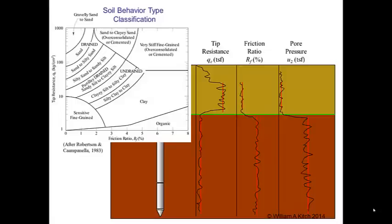We can use the CPT measurements to classify the soil based on its behavior, using the chart developed by Robertson and Campanella in 1983. This chart has different soil classification regions based on the measured friction ratio and tip resistance. The area in the upper left-hand corner represents high tip resistance and low friction ratio, labeled as a region of sands and gravels. Sands and gravels have high frictional resistance but no cohesion. Therefore, when the CPT probe is pushed into sands and gravels, they produce a relatively high tip resistance as the soil shears around the tip. However, once the cone tip has pushed the sand or gravel out of the way, the soil provides very little side friction because these soils have no cohesion. Soils exhibiting high tip resistance and low friction ratio are generally sands and gravels.